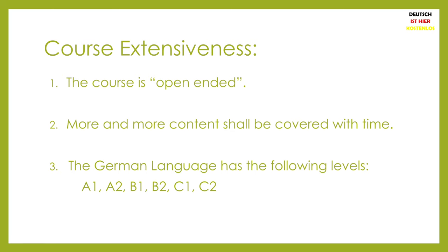What I mean by open-ended is that this course will continue to go on regardless of what level of proficiency it reaches. Do not freak out — the course is still meant for absolute beginners. More advanced topics will be covered with time based on your interest and response. As most of you might know, the German language has different levels of proficiency: A1, A2, B1, B2, C1, and C2. A1 and A2 will definitely be covered in this course.